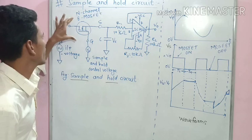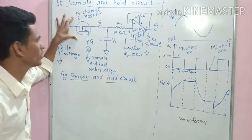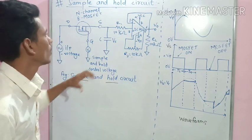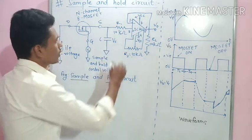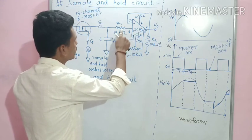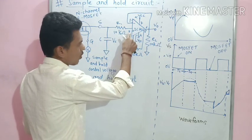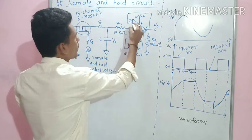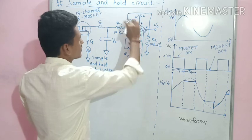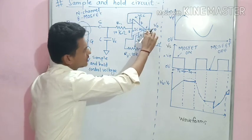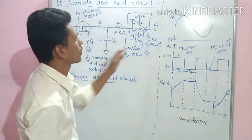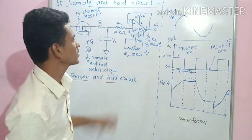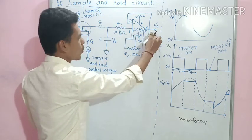This N-channel MOSFET is used as a switch — as an open switch or a closed switch. The non-inverting terminal of the operational amplifier is connected to the input signal, and the inverting terminal is connected to the 6th pin of IC 741 without feedback resistance.